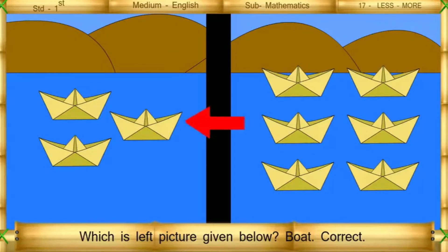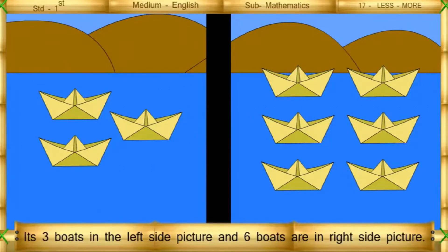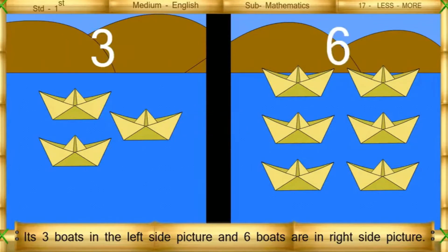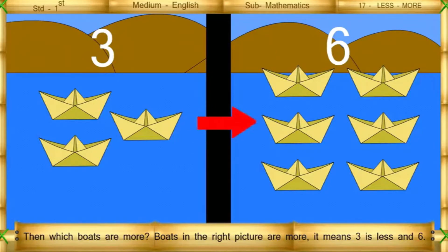Which is the left picture given below? Boat. Correct. Now, count the boats in the left picture. There are 3 boats in the left side picture and 6 boats in the right side picture. Then which boats are more? Boats in the right picture are more. It means 3 is less than 6.